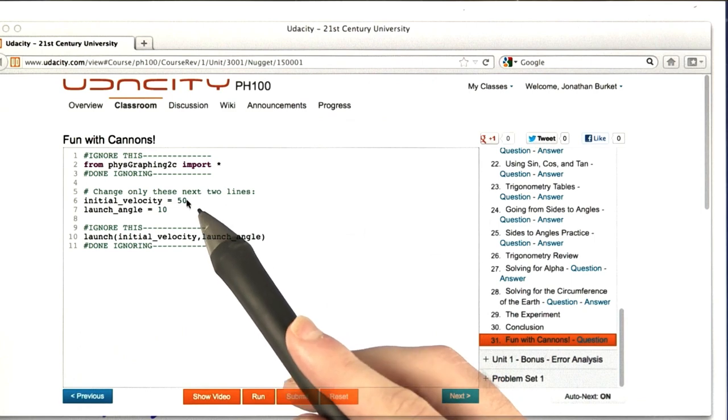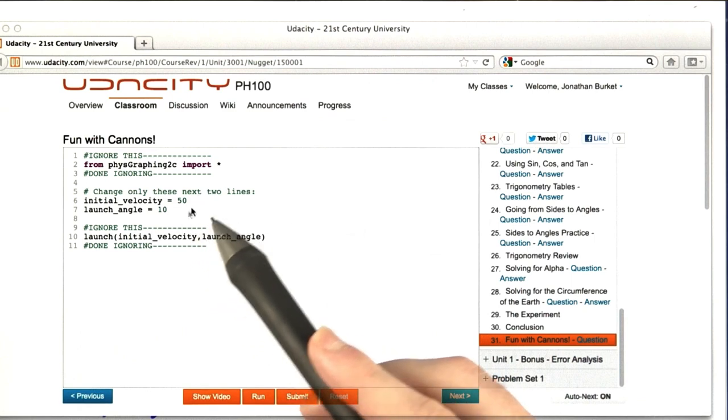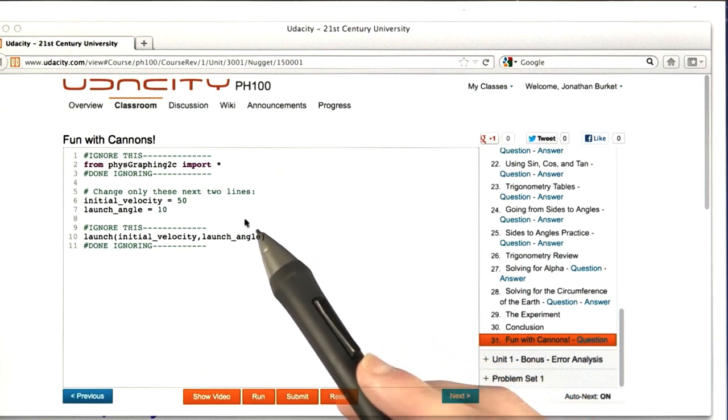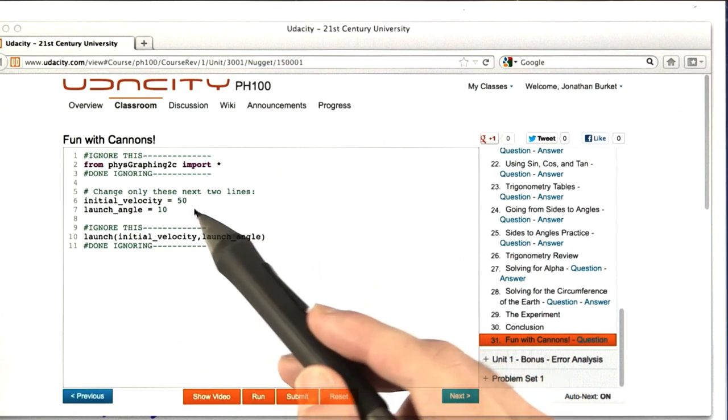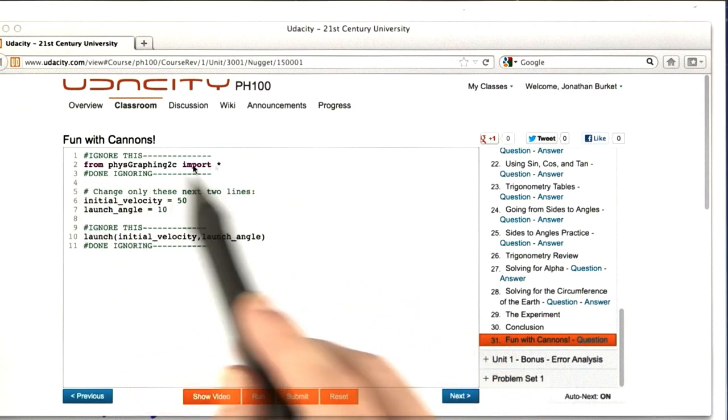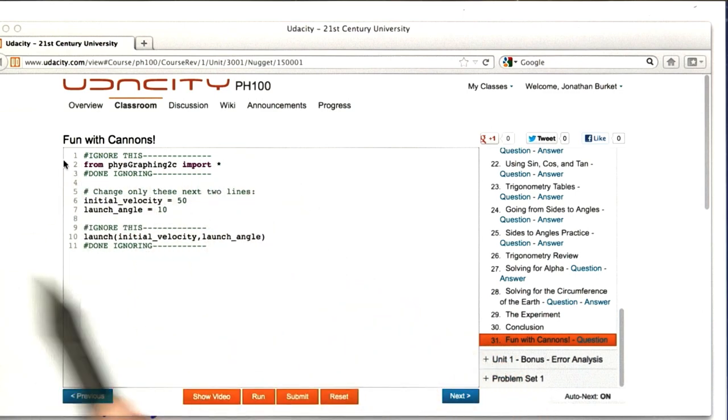To answer this question, we're going to use a slightly different form of input than we normally do. This window here contains computer code, and you may have used this window before if you've taken a computer science class at Udacity. We're only going to focus on these two numbers here. These two are the important ones. You don't need to worry about this line up here and this line down here.